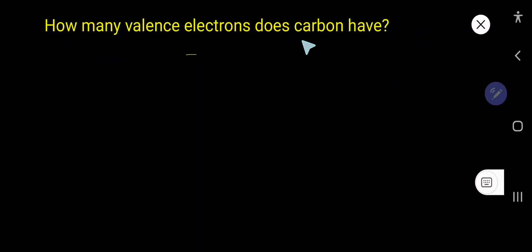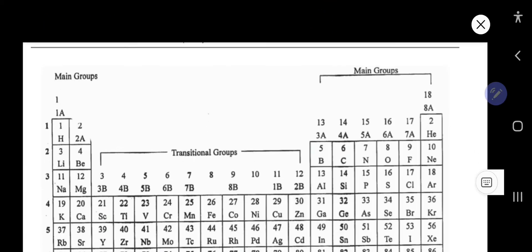How many valence electrons does carbon have? Carbon has four valence electrons. I will show you two methods to find out the valence electrons for carbon. The first method is to use the periodic table.